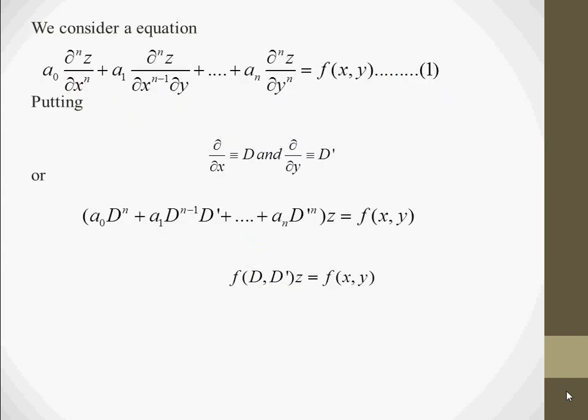Here we consider a homogeneous linear differential equation. In this equation, the order of all derivatives is the same — that is why it is homogeneous — and the degree of each derivative in each term is 1, which is why it is a linear equation.